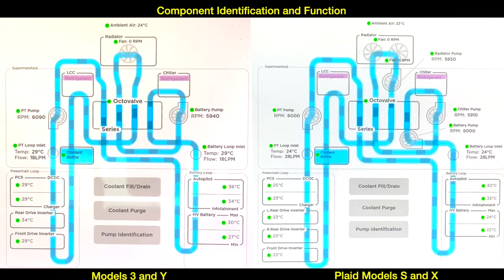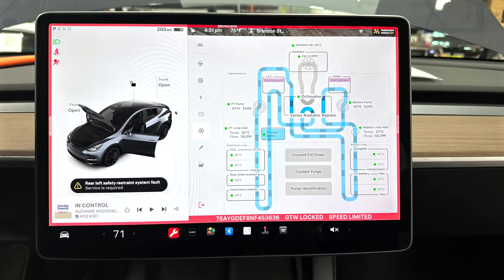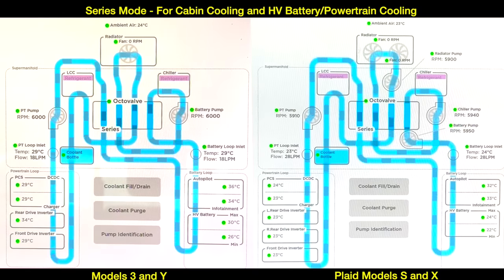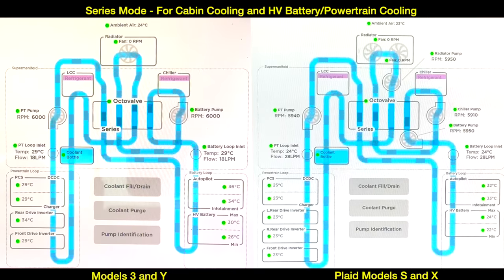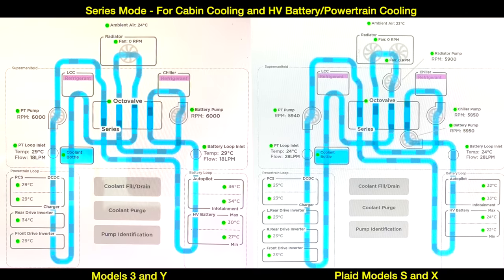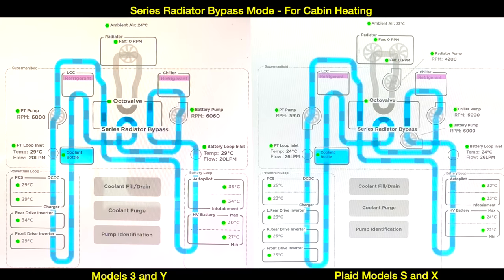Now let's take a look at the different modes of operation and the coolant flow path in each mode. The first mode is called series mode, where the entire powertrain coolant loop is put in series with the battery coolant loop for maximum cooling of the cabin, the high voltage battery, and the powertrain. Notice that the flow rate on the Model 3 and Y is 18 liters per minute, and on the Model S and X Plaid is 28 liters per minute.